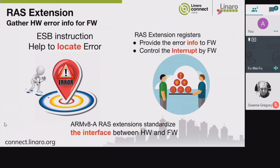RAS extension has been defined in ARMv8.2. It's the first hardware-level support for RAS on ARM64. It's very important because all the error detection, correction, and most of the recording starts from here. ESB can be used for localizing errors, and the RAS extension registers can provide error info and control the RAS-relevant interrupts. It simplifies and integrates the mechanism of reporting errors and standardizes the interface between hardware and firmware.